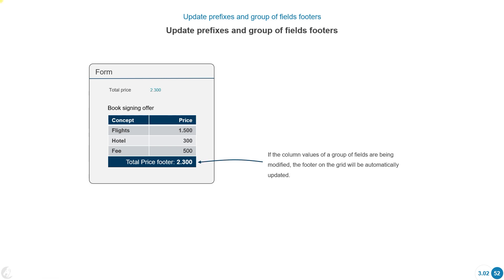The next option is to update prefixes and group of fields footers. When working with a group of fields, we can create footers for columns and display that footer in two different places: within the group of fields itself, or as an independent field in the panel of the process and in a form. In scenarios where system tasks are adding lines to a group of fields and changing values, the footer may not be automatically updated if the form isn't being displayed.